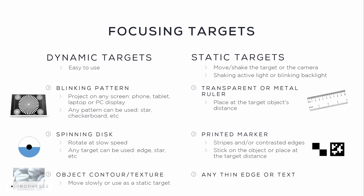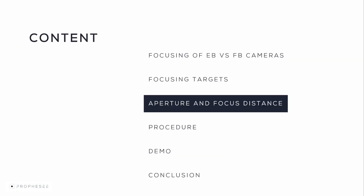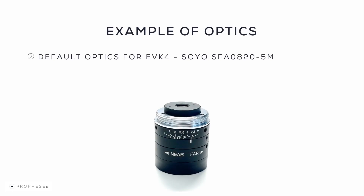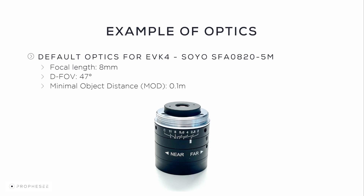The optimal target depends on your setup, the space available within the setup, and the application. The lens that comes with the EVK4 is a Soyo optic with an 8mm focal length — a link to the datasheet is given in the description below the video. This lens allows achieving a diagonal field of view on the EVK4 of 47 degrees, making it possible to use for close and mid-range applications. The minimum object distance, or MOD, is 0.1 meters, or about 4 inches.